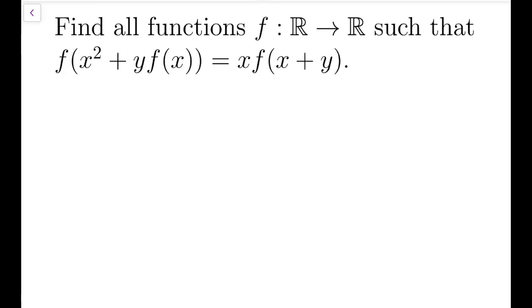So the first thing I will do is to simply put x and y to be both zero. Then I will have f of zero plus zero times f of zero equals zero times f of zero. Then we know that f of zero is simply zero.